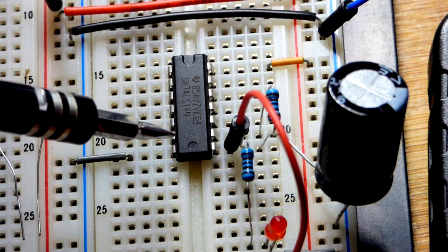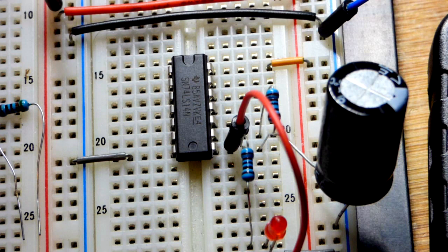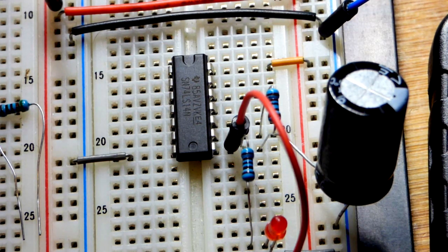And then again, we have the output input, output input, output input. So there's six circuits. We're only using one of them. They're identical circuits otherwise though.